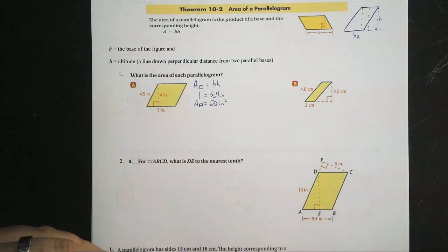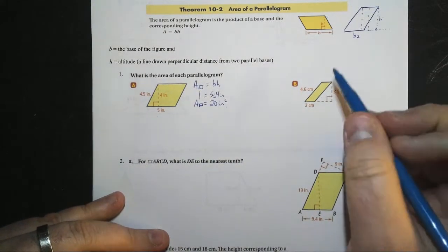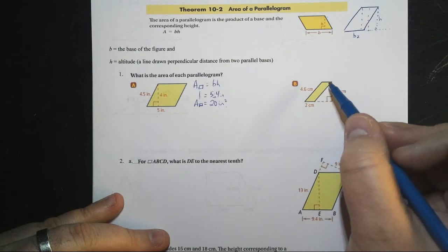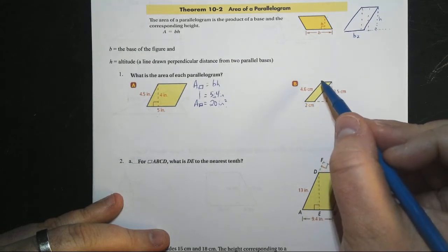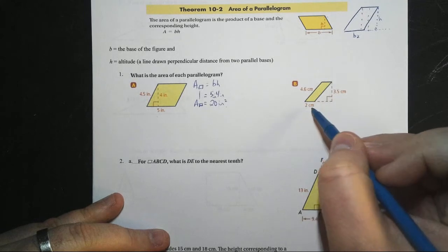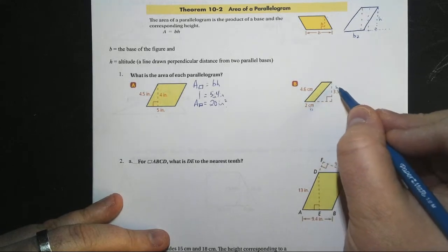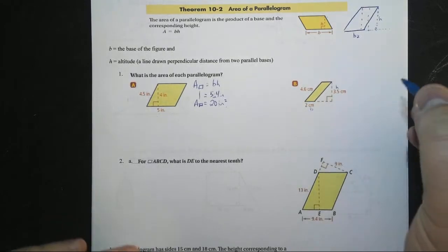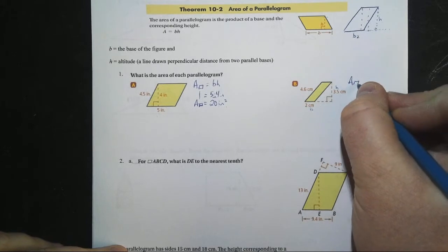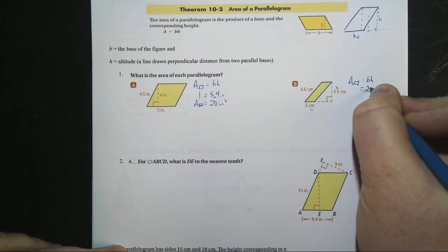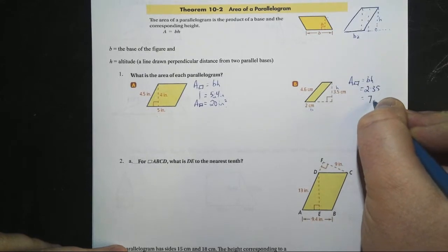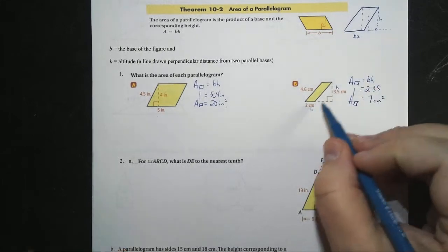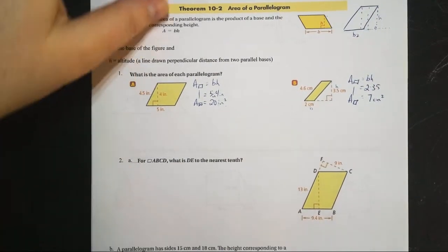Number two, letter v: we have sides of 4.6 and 2. The height is the perpendicular distance, so from here down to here. The base is 2 and the height is 3.5 — that dashed line is not part of the base. Area of parallelogram equals base times height: 2 times 3.5 equals 7 centimeters squared. If no units are listed, you can write 'u squared' for units squared, or leave it blank.